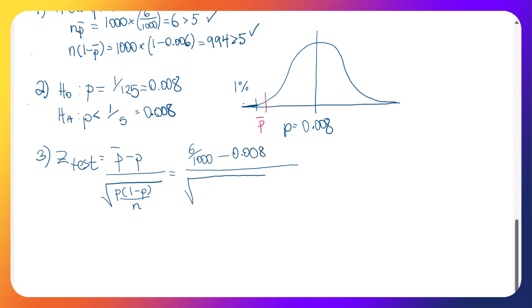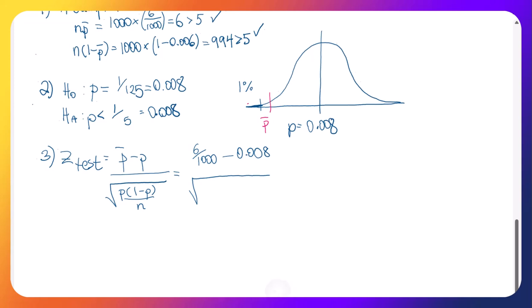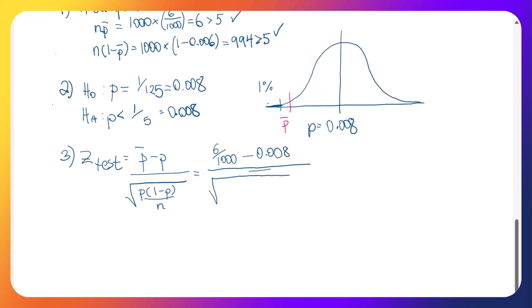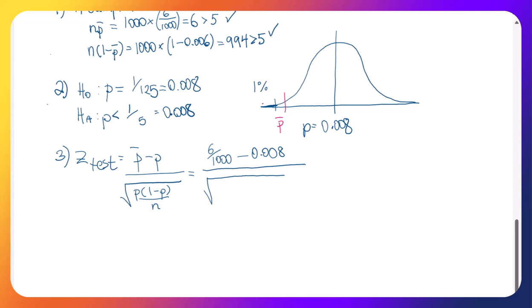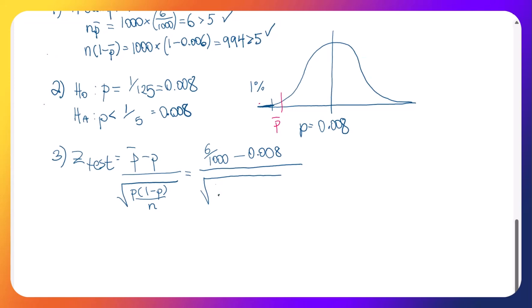And on the bottom, so let's just write that as the 0.008. That's just a little bit shorter. So p is the 0.008. And 1 minus the 0.08 is 1 minus p, all divided by n, which is 1,000 in this case.